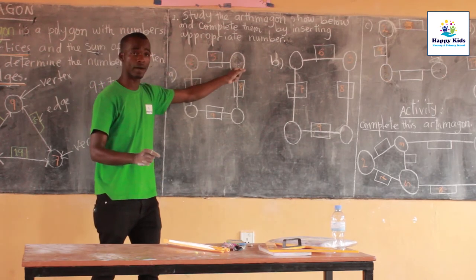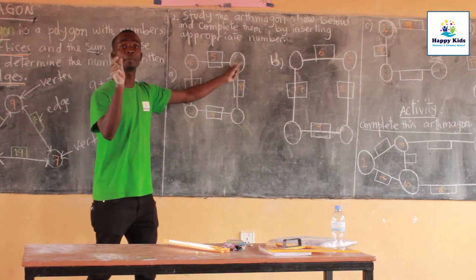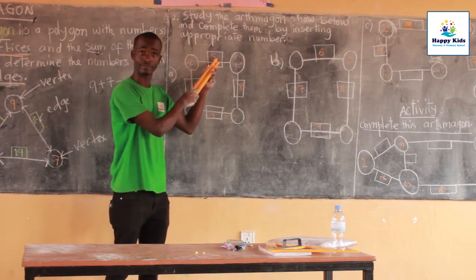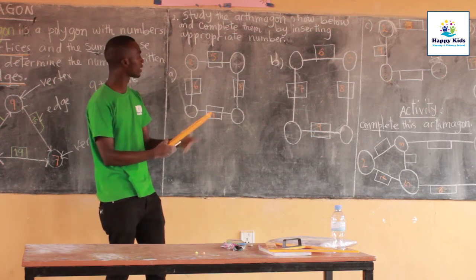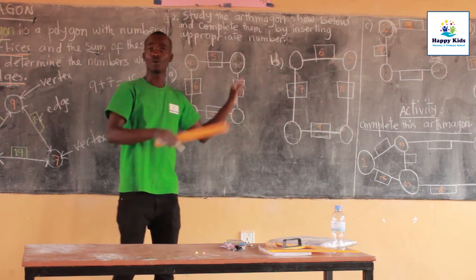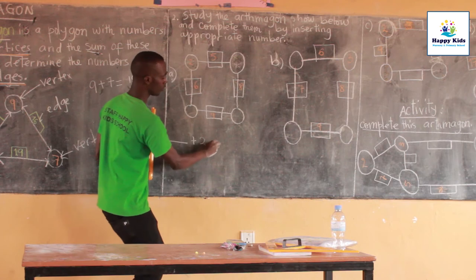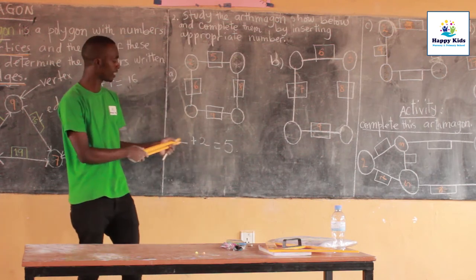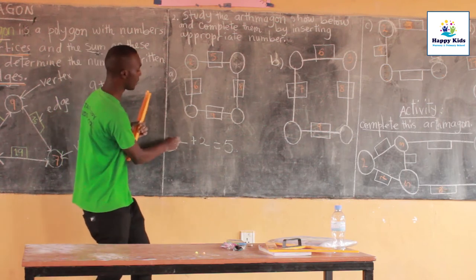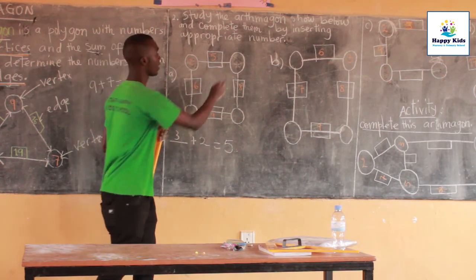They are asking us to complete — to put in the number which is missing. What is the missing number? It is the number which can be added to these two to get the sum of five. What number can I add to two to get five? I think that number is three — because three plus two equals five. The missing number here is three.